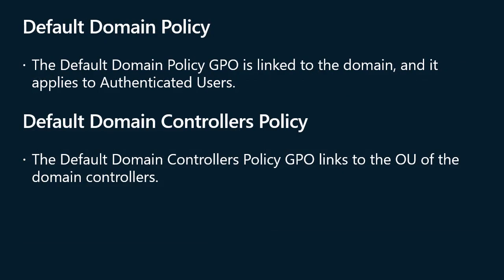You can create domain-based GPOs in ADDS and store them on domain controllers to manage configuration centrally for the domain's users and computers. When you install ADDS, Windows Server creates two default GPOs: Default Domain Policy and Default Domain Controllers Policy. Note that Windows computers also have local GPOs, which are primarily used when computers aren't connected to domain environments. The Default Domain Policy GPO is linked to the domain, applies to authenticated users, has no WMI filters, and therefore affects all users and computers in the domain. This GPO contains policy settings that specify password, account lockout, and Kerberos v5 authentication protocol policies.